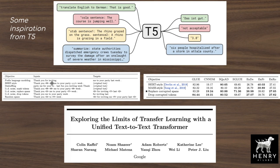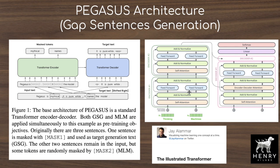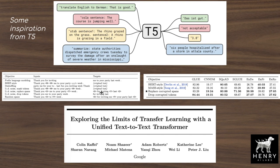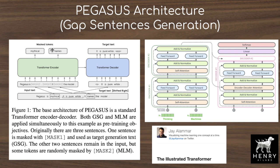What T5 finds—and Pegasus also does—is that the transformer decoder only reconstructs the masked-out sentence. So if 'it is pure white' is masked, the model just decodes 'it is pure white' rather than reconstructing the entire input, saving a lot of computation. For more on self-attention and encoder-decoder versus encoder-only or decoder-only architectures, the Illustrated Transformer is highly recommended.